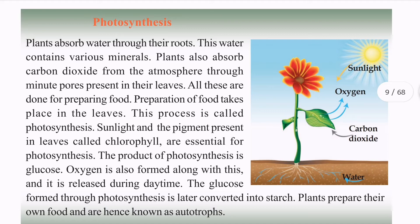Photosynthesis involves water, carbon dioxide, and sunlight. The pigment present in leaves is chlorophyll, which is essential for photosynthesis. Sunlight is required.